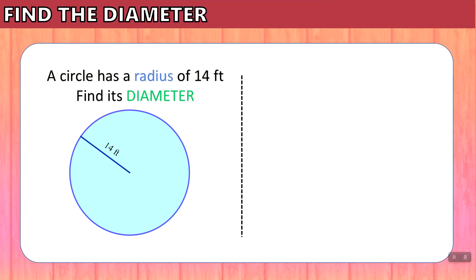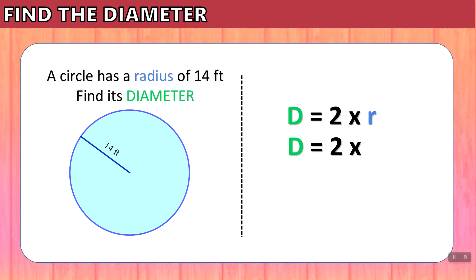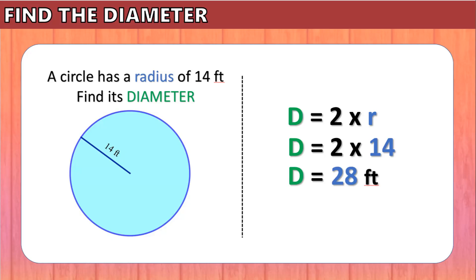How about this question? A circle has a radius of 14 feet — find its diameter. Again, we use the formula D equals 2 times R. We substitute R for the number that we know; in this case, the radius is 14 feet. And 2 times 14 is 28, so the diameter in this circle is 28 feet.